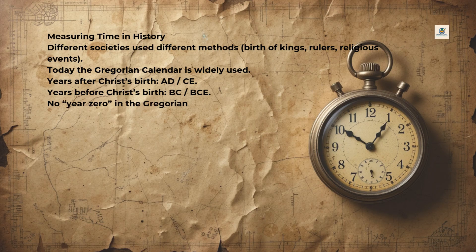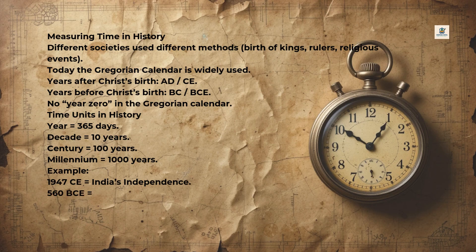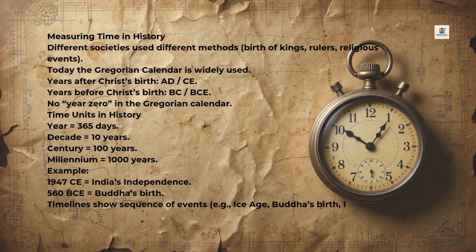Time units in history: a year equals 365 days, a decade equals 10 years, a century equals 100 years, and a millennium equals 1,000 years. For example, 1947 CE marks India's independence, and 560 BCE marks Buddha's birth. Timelines show the sequence of events such as the Ice Age, Buddha's birth, Indus Valley civilization, Jesus' birth, and more.